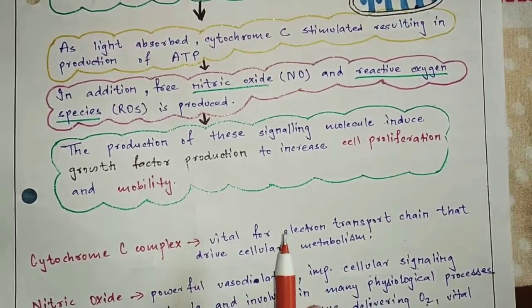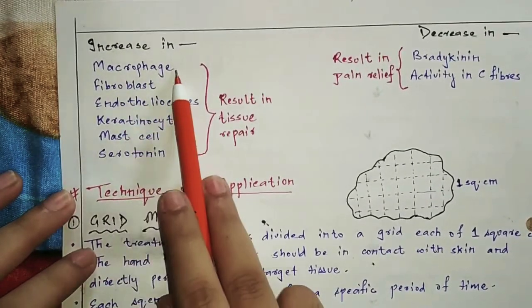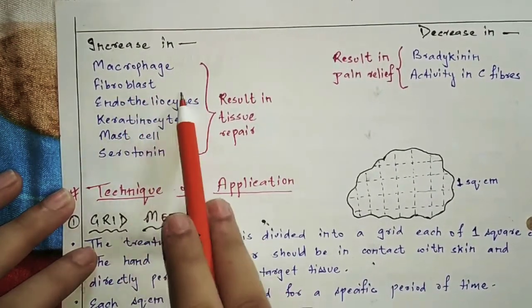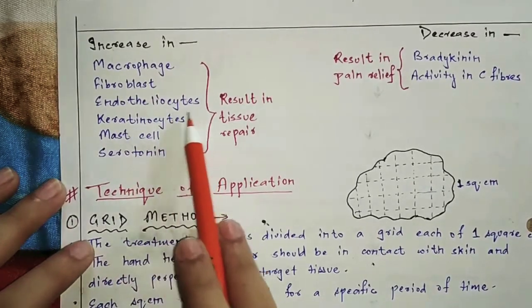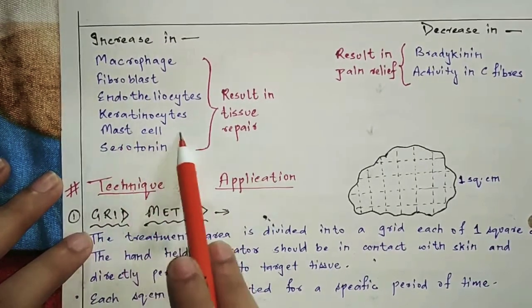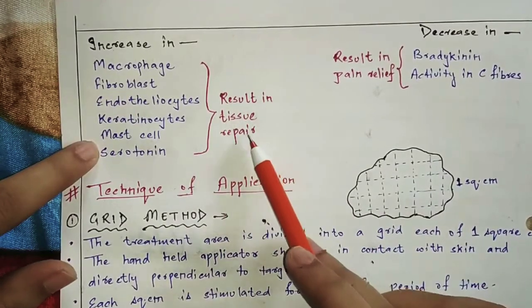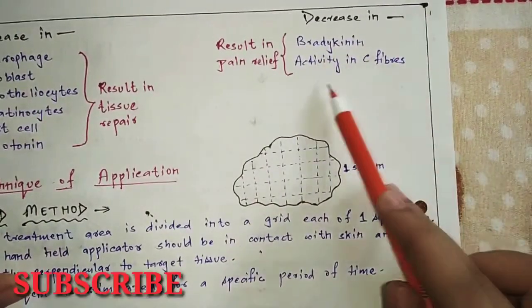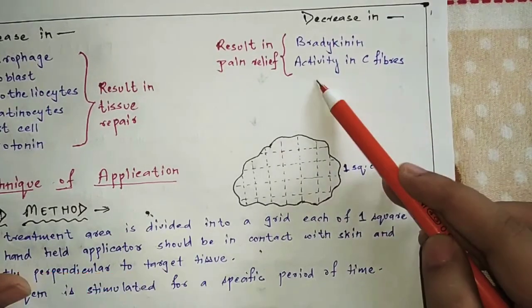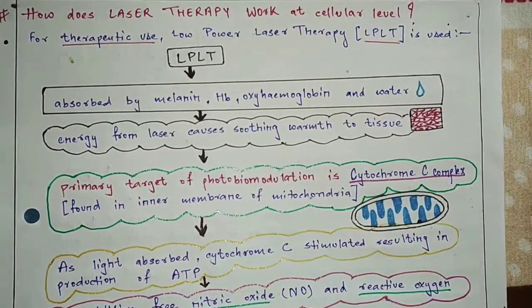As a result of cell proliferation and mobility, cell repair and tissue repair occur. For tissue repair, laser light increases macrophages, fibroblasts, endothelial cells, keratinocytes, mast cells, and serotonin. Additionally, bradykinin activity and C-fiber activity decrease, resulting in pain relief. This is how laser works at the cellular level.